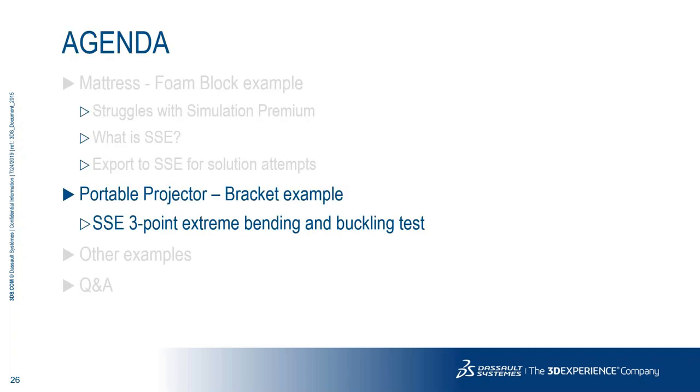To summarize what we just did in this example: we started with SolidWorks Simulation Premium and struggled to get it to run to 100% — the marble kept falling off the track. Then we switched over to SSE, used a high-quality brick element mesh, and were able to set up the track so our marble could roll down more stably. We used a smaller marble to get there faster and stay within the confines of the track.